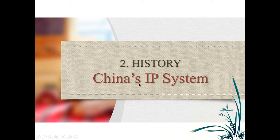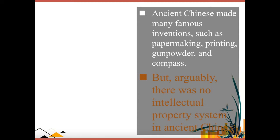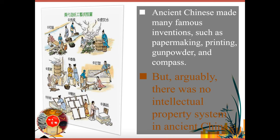Section two: China's IP system from a historical perspective. Although ancient Chinese made famous inventions such as paper-making, gunpowder, and the compass, it is generally believed by major scholars that there was no intellectual property system in ancient China.